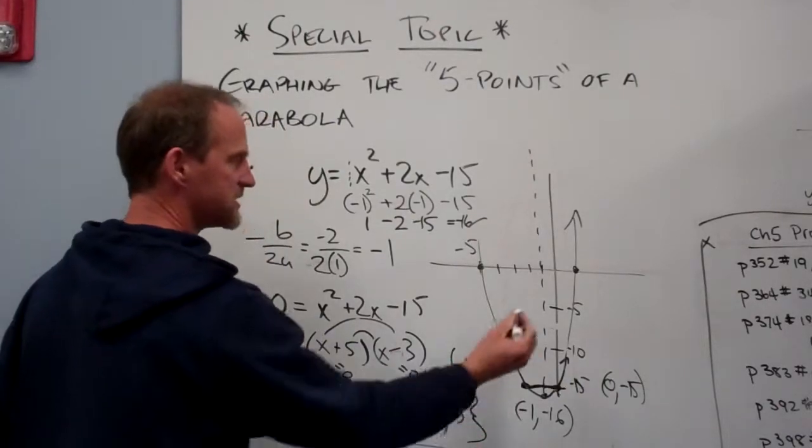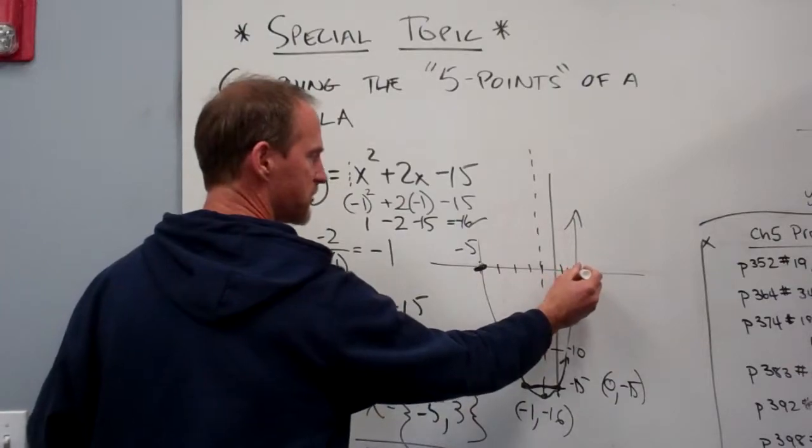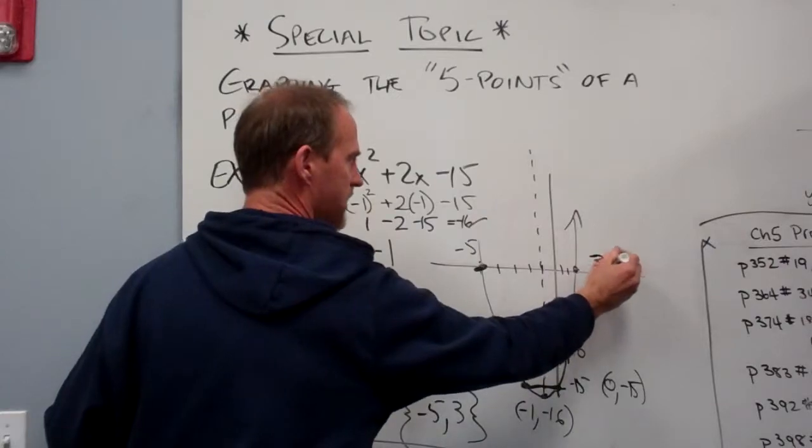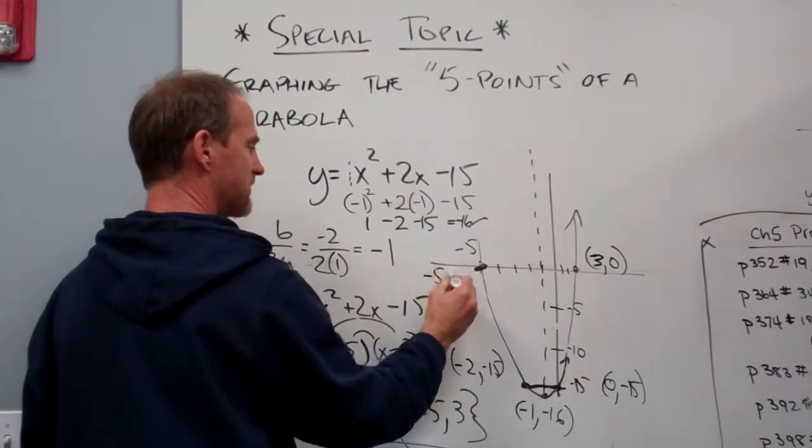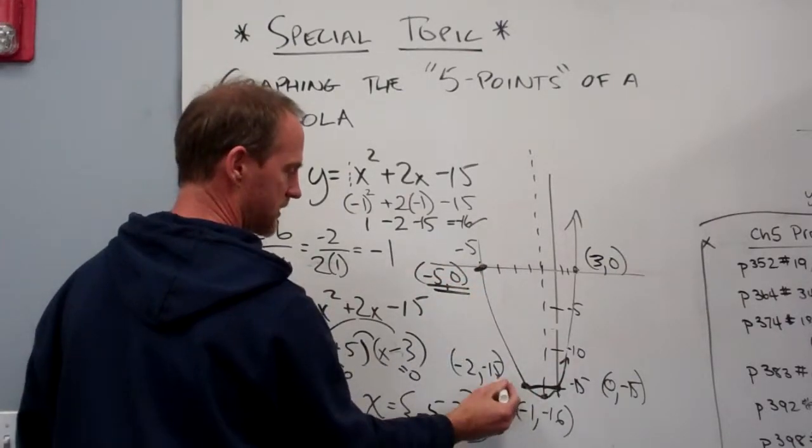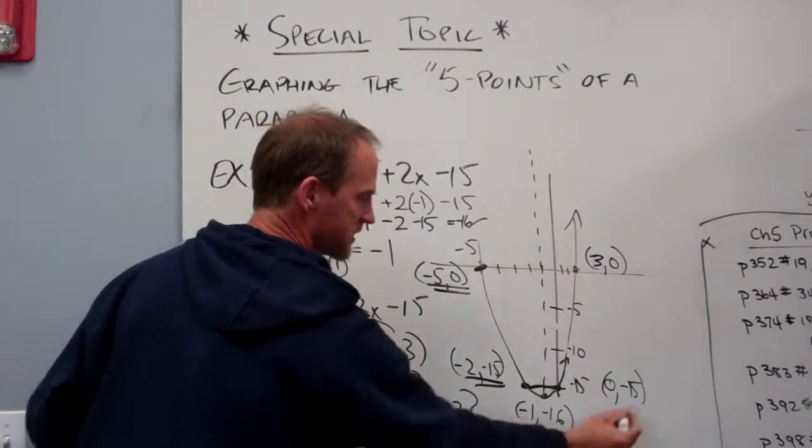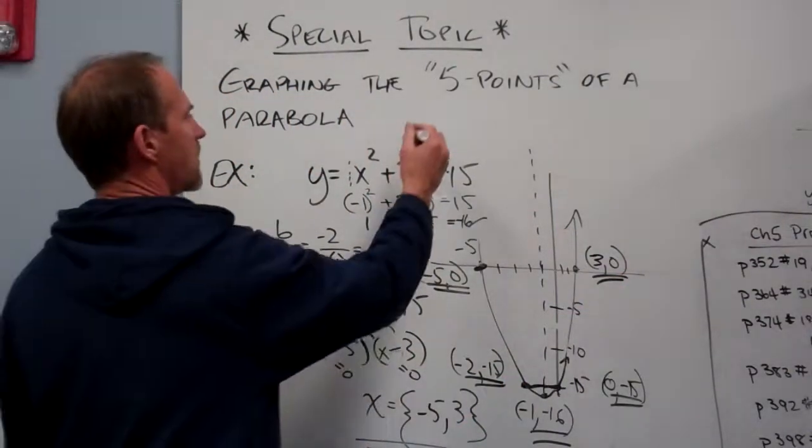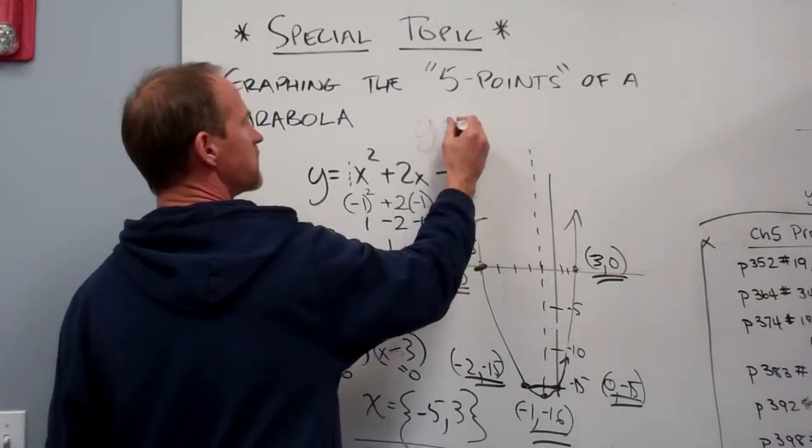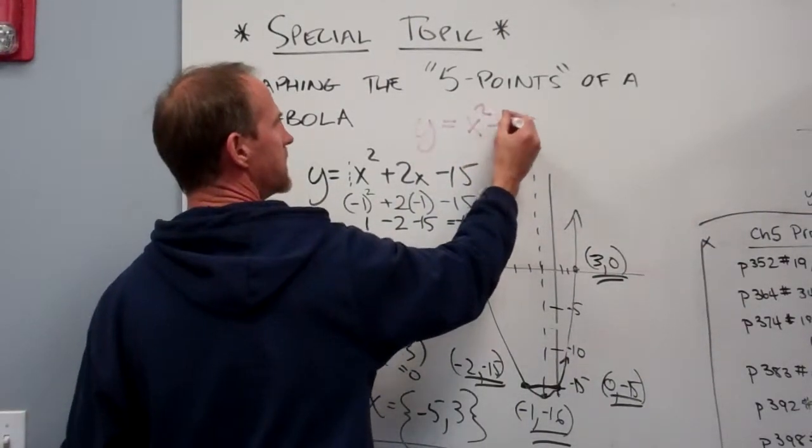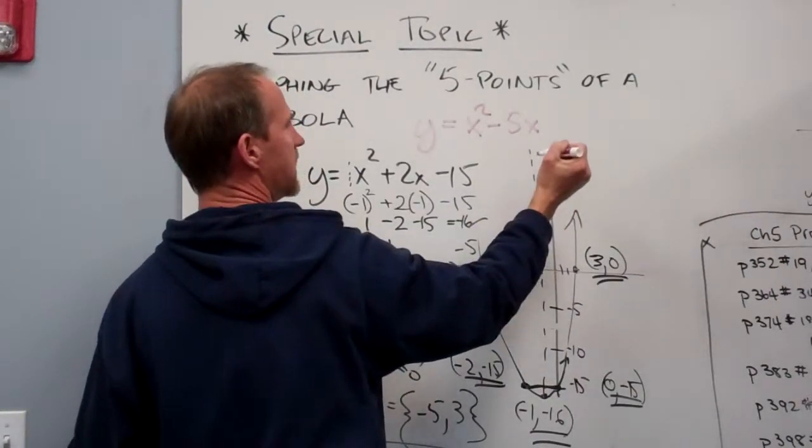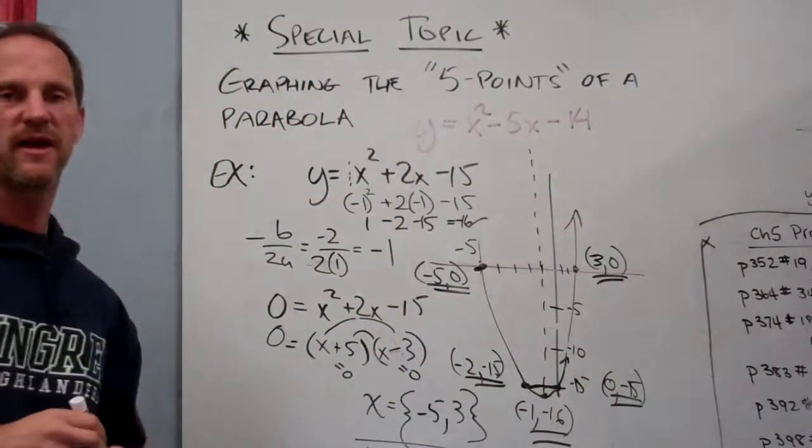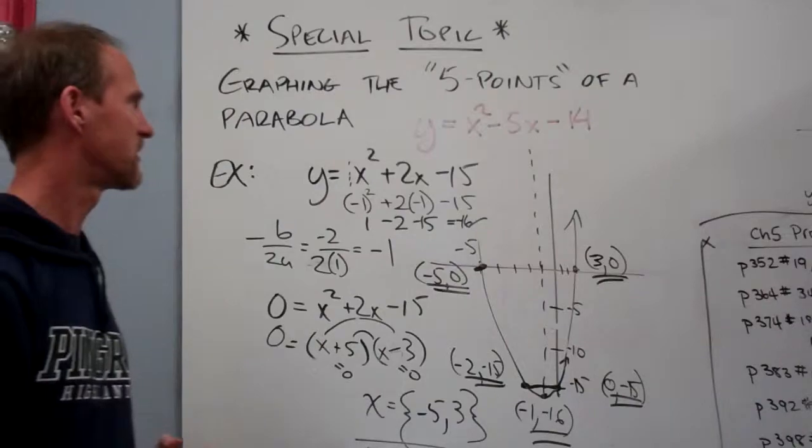That's x is equal to negative 5 and positive 3. So that means I go to negative 5 and 1, 2, positive 3. So when x is positive 3, y is 0. When x is negative 5, y is 0. And I found there are the 5 points of the parabola. So why don't you try y equals x squared minus 5x minus 14. Why don't you try finding the 5 points of that parabola. Alright, good luck.